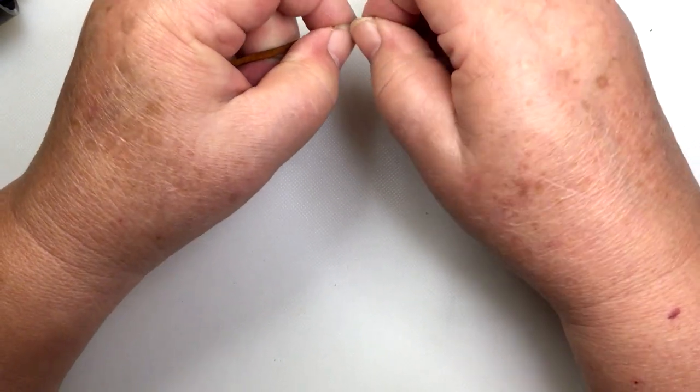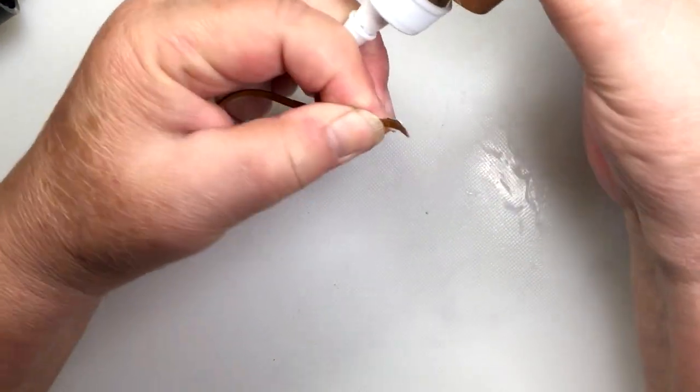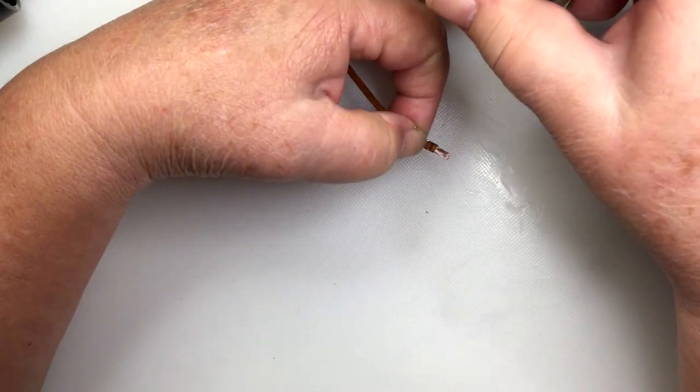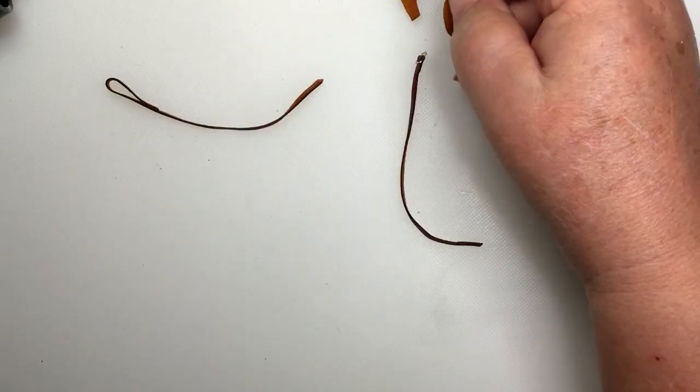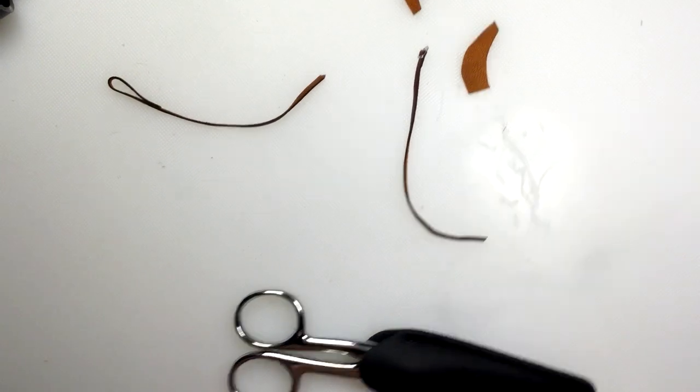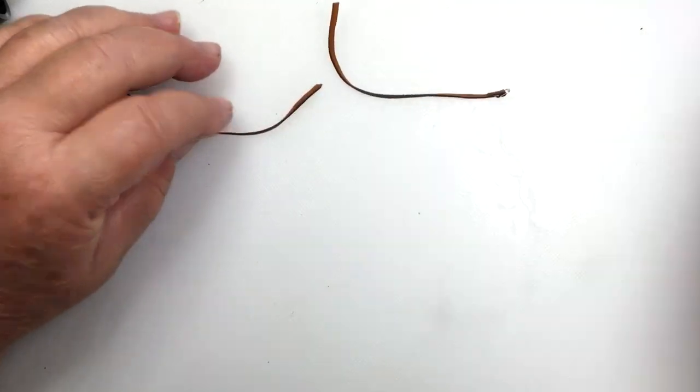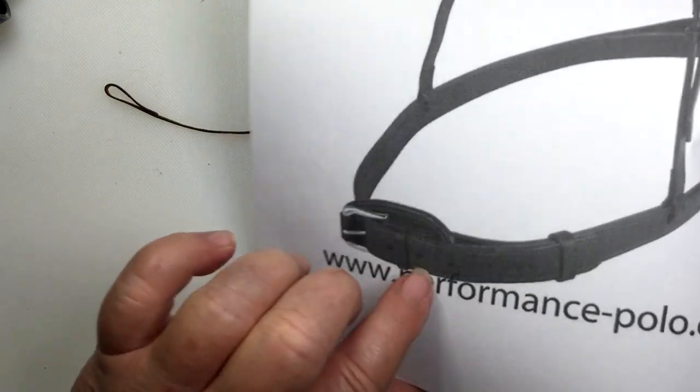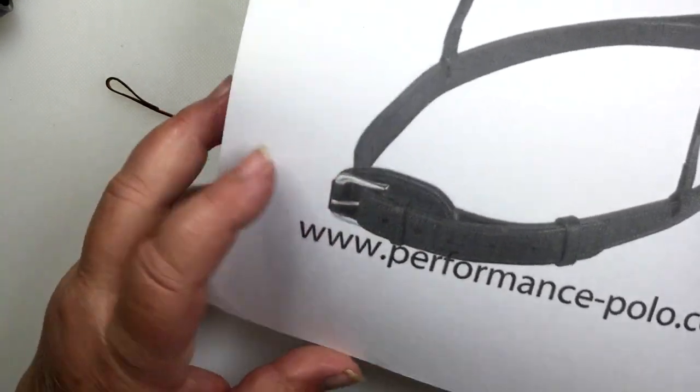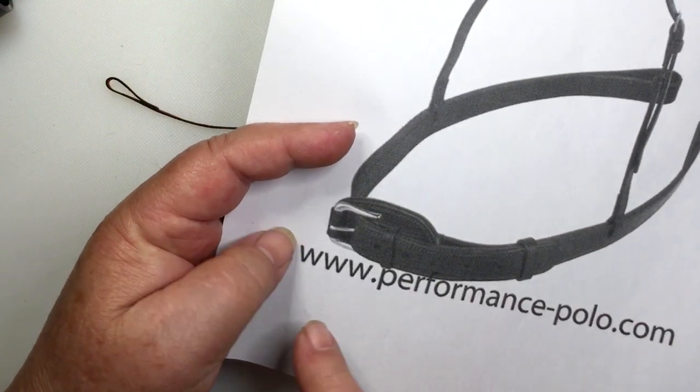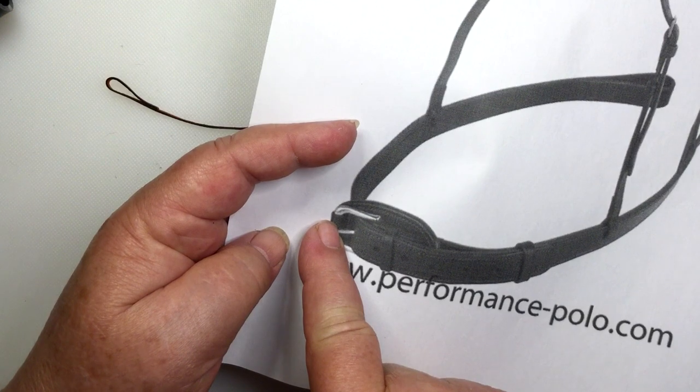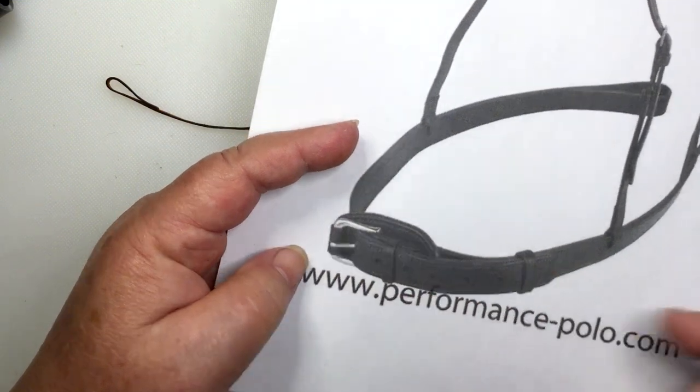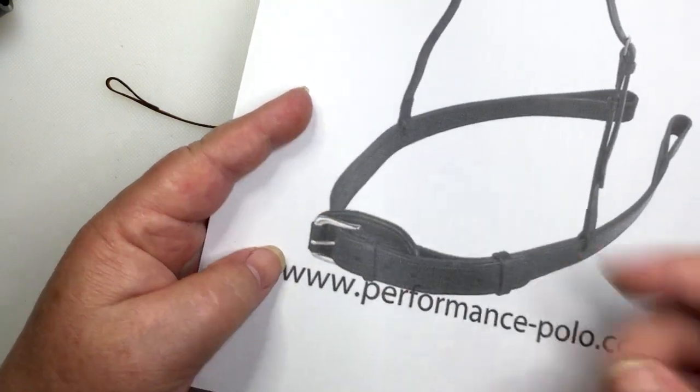So the English saddle, the link for that is in the description, and I have a playlist on my channel for Polo Pony. It includes things that I won't really go over here, which is like the leg wraps. I'm not going to go over leg wraps, I've done those before, or any of the other English style boots.